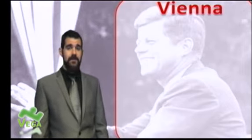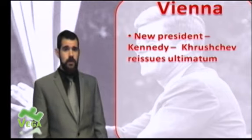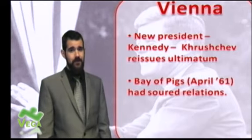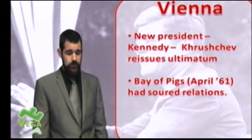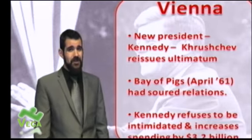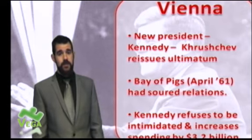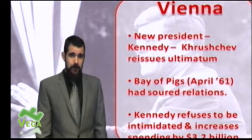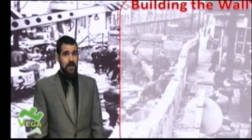Nothing gets decided for a while, but then there's an opportunity — JFK becomes president of the US. Khrushchev sees him as a pushover and reissues his ultimatum for American troops to leave Berlin. However, the Bay of Pigs has soured relations further. Kennedy can't afford to back down so early in his presidency, especially given that Eisenhower partly lost the election because people thought he was losing the Cold War. Kennedy refuses to be intimidated and increases American arms spending by $3.2 billion — not the reaction Khrushchev was looking for.